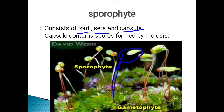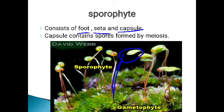The sporophyte is diploid. Inside the capsule, some diploid cells undergo meiosis — the reduction division — which reduces chromosome number to half, producing haploid spores. These spores are released out and fall onto a suitable substratum, developing into a new gametophyte. Mosses follow various mechanisms for spore dispersal — with the help of water or air, spores can be carried from one place to another.